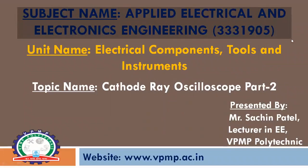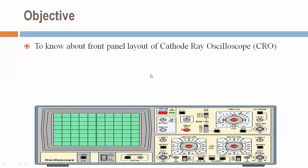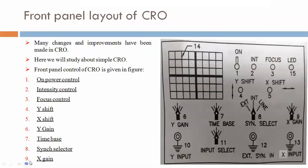Subject name: Applied Electrical and Electronics Engineering. Subject Code 3331905. Unit name: Electrical Components, Tools and Instruments. Topic name: Cathode Ray Oscilloscope, Part 2. Myself Sachin Patel, Lecturer in Electrical Engineering, VPMP Polytechnic. Objective of today's lecture is to know about Front Panel Layout of Cathode Ray Oscilloscope, CRO. Front Panel Layout of CRO.